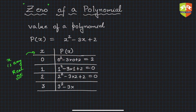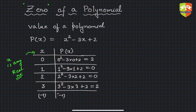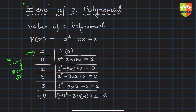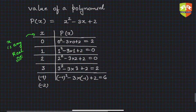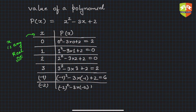For x equals 3, it becomes 3 squared minus 3 times 3 plus 2, which is 9 minus 9 plus 2, giving 2. For x equals minus 1, we get minus 1 squared minus 3 times minus 1 plus 2, which is 1 plus 3 plus 2, giving 6. For x equals minus 2, we get 4 plus 6 plus 2, which is 12.